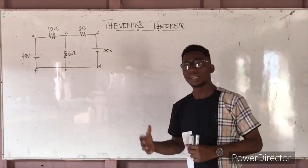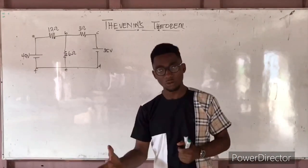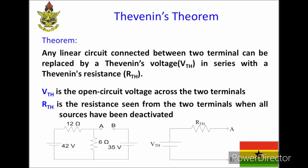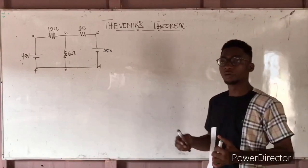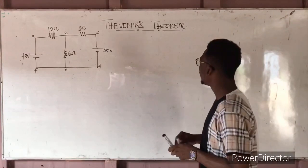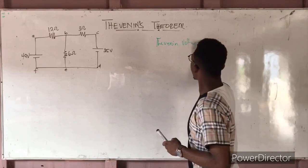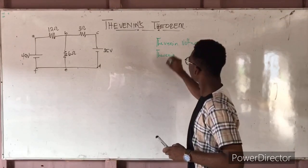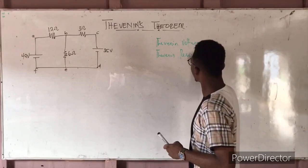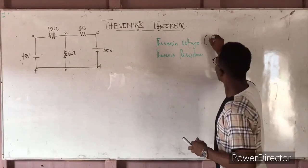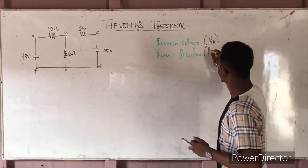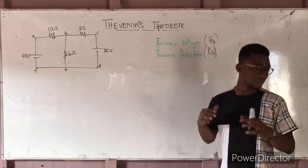Now, what does Thevenin's theorem give us? Thevenin gave a theorem: any linear circuit connected between two terminals can be replaced by a Thevenin voltage in series with a Thevenin resistance. So in Thevenin's theorem we need two main things: the Thevenin voltage, represented as V_TH, and the Thevenin resistance, represented as R_TH.